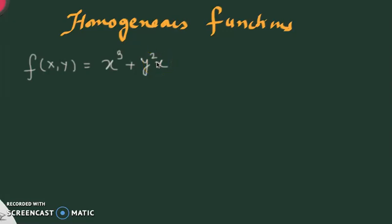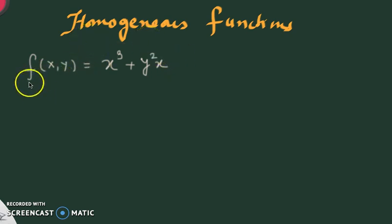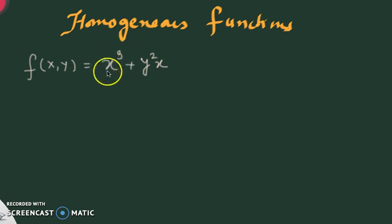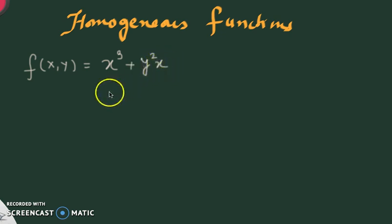Today I am going to discuss the homogeneous function. Before giving a definition, I'd like to take one example. I have taken a function of two variables x and y: f(x,y) = x³ + y²x. The first term has degree 3 and the second term also has degree 3.